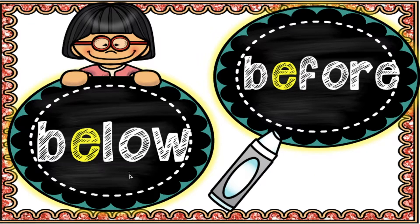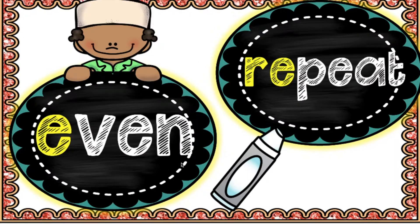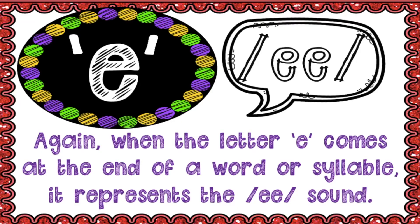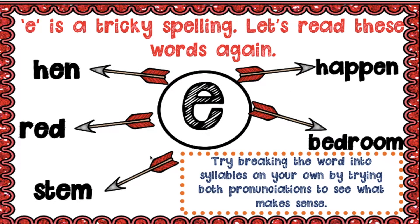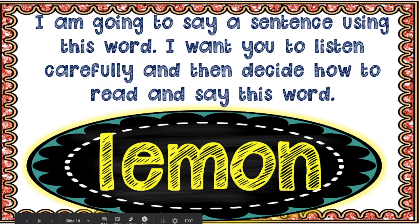In these words, the first syllable ends in that vowel E, so that's what makes that E say its name. Below, before — read these with me: even. When the letter E comes at the end of a word or syllable, it represents the /iː/ sound. Now try breaking these words into syllables. 'Hen' is one syllable — that is not an open syllable, so that's why it says the short E. When you break apart 'bedroom,' the ending sound in the first syllable 'bed' is not the E, so that's why it says /ɛ/ instead of /iː/.